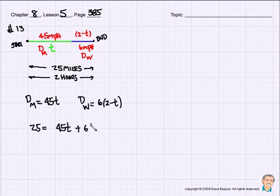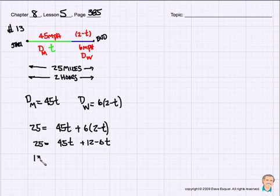And both of those added up are going to be the total distance of 25 miles per hour. So 25 turns out to be equal to 45 T plus 6 times 2 minus T. Or 25 turns out to be 45 T plus 12 minus 6 T. Or this turns out to be, if I do my math right, 13 turns out to be equal to 45 take away 6 T is 39 T. Or T, if I divide both sides by 39, turns out to be 1 third.